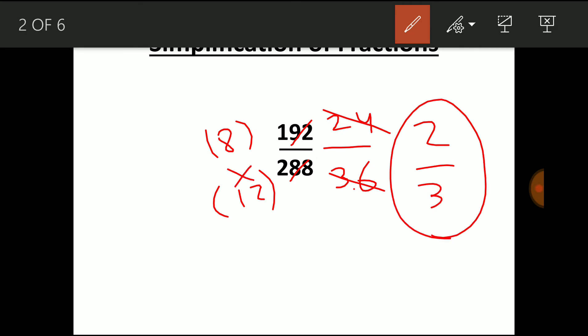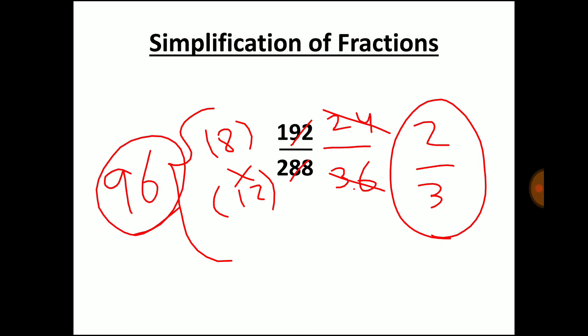Now let us multiply 8 into 12. 8 into 12 you get 96. So 96 is the highest common factor. Whenever you take the highest common factor from two numbers, the resultant number is co-prime and it becomes the proper fraction.